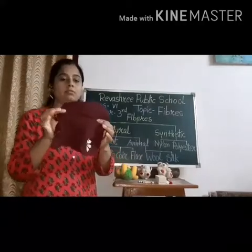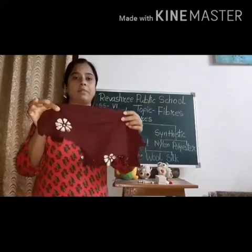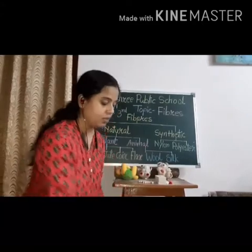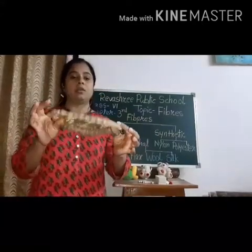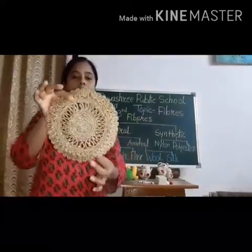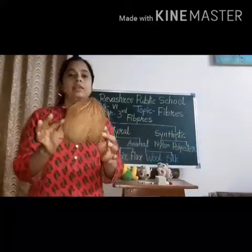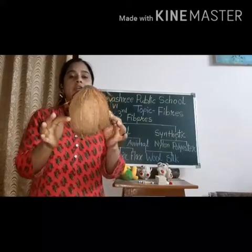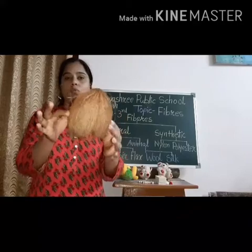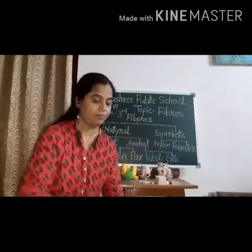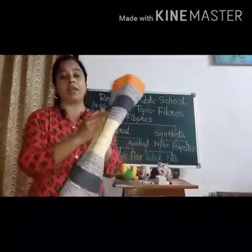First, cotton. This is cotton fabric made with cotton fibers. Second, jute — this is jute, a brown fiber. Then coir — coir is obtained from the outer covering of coconut. This is a coir sample. Then, this is fabric made with flax.